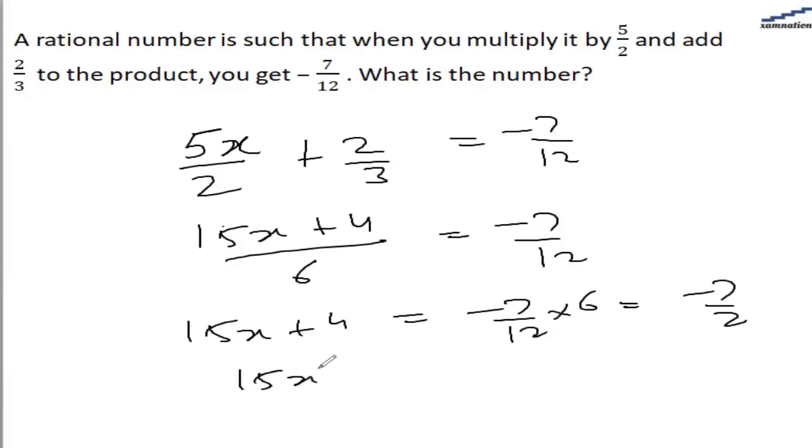So 15x plus 4 is equal to minus 7 by 2. Which means 15x is equal to minus 7 by 2 minus 4, that is equal to minus 7 minus 8 by 2.